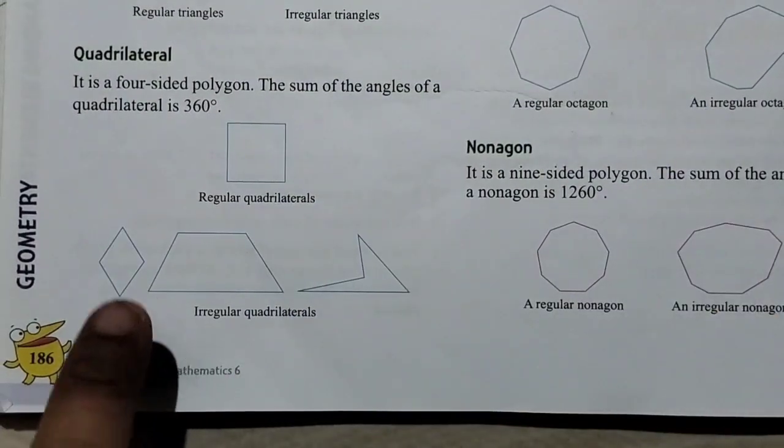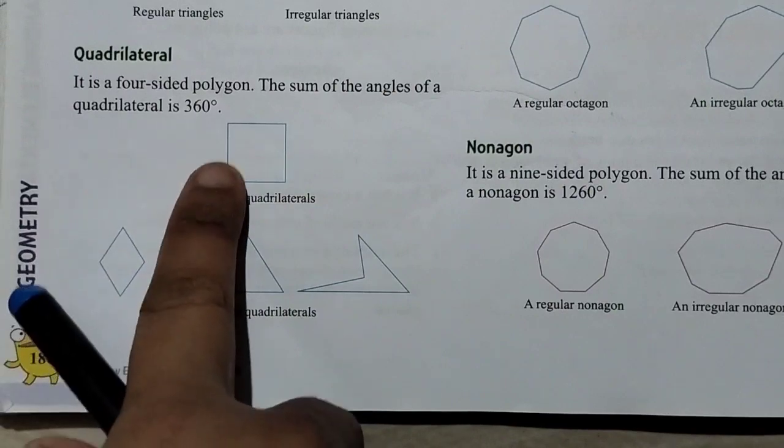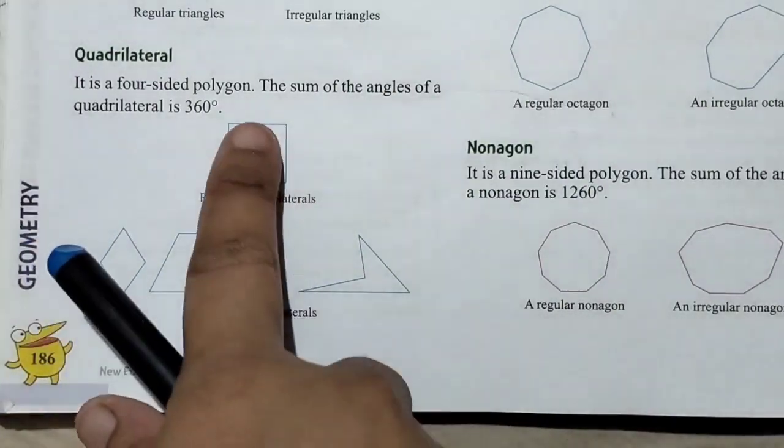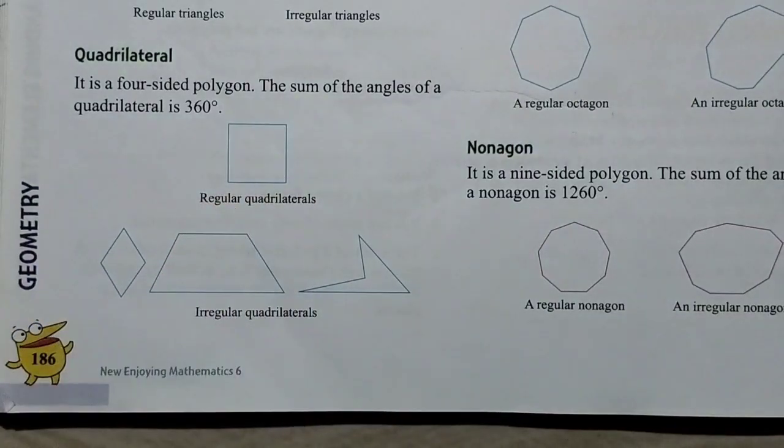Quadrilateral. It is a four-sided polygon. There are four sides and four angles. The sum of the angles is 360 degrees.